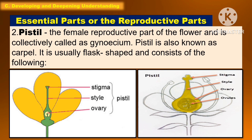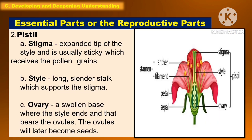Another reproductive part of the flower is the pistil, which is the female reproductive part, collectively called the gynoecium. The pistil is also known as the carpel and is usually flask-shaped. Its parts include the stigma, which is the expanded tip of the style and is usually sticky to receive pollen grains; the style, which is a long slender stalk that supports the stigma; and the ovary, which is the swollen base where the style ends and bears the ovules. The ovules will later become seeds.